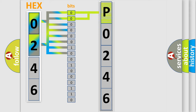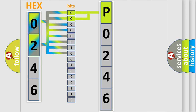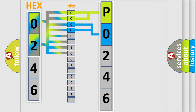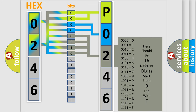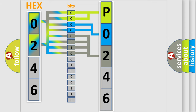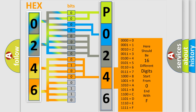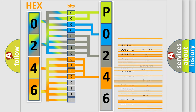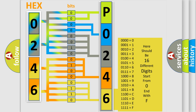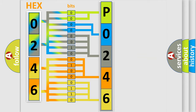By combining the first two bits, the basic character of the error code is expressed. The next two bits determine the second character. The last bits of the first byte define the third character of the code. The second byte is composed of a combination of eight bits. The first four bits determine the fourth character, and the last four bits define the fifth character. A single byte conceals 256 possible combinations. We now know in what way the diagnostic tool translates the received information into a more comprehensible format.